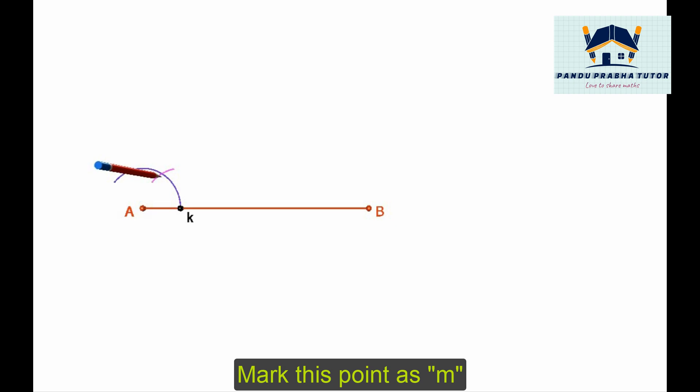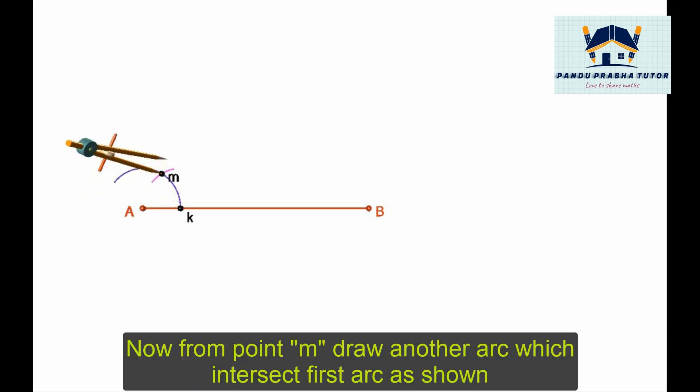Mark this point as M. Now from point M, draw another arc which intersects the first arc. Name that point as N.